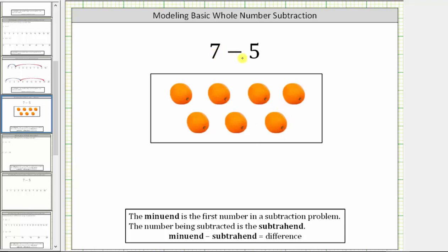And then because we have 7 minus 5, we can think of subtraction as removing or taking away. So because we have 7 minus 5, we want to remove or take away 5 of the 7 oranges. So if we remove or take away 5 oranges, we remove 1, 2, 3, 4, 5 oranges, leaving us with 2 oranges, which gives us the difference.